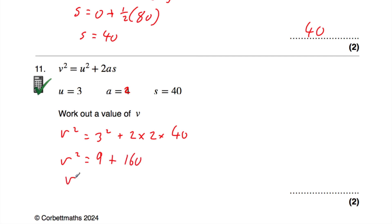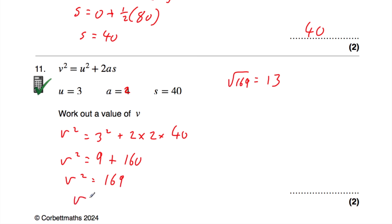v squared equals 169. The square root of 169 is 13, so v could be 13. But it could also be negative 13, because negative 13 times negative 13 is also equal to 169 — a negative times a negative is a positive. So v is equal to plus or minus 13. The question asks to work out a value of v, so v equals 13 or negative 13, and either is fine.